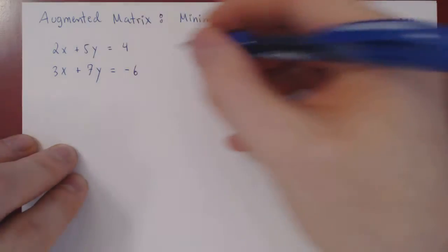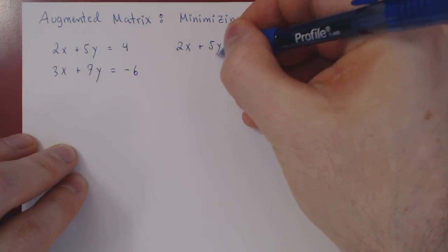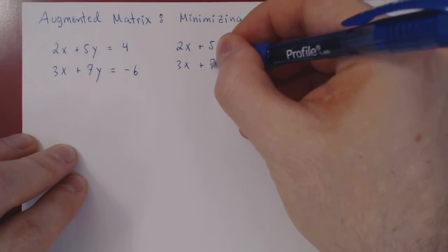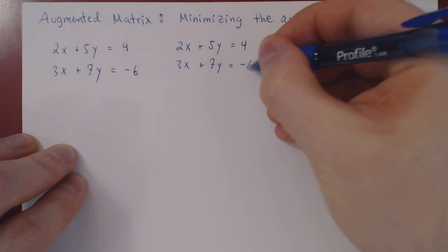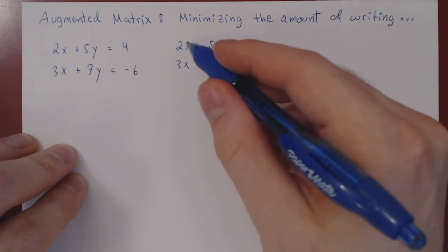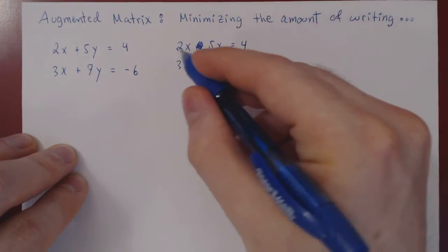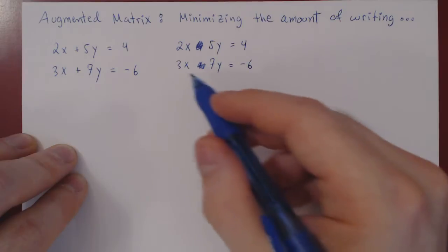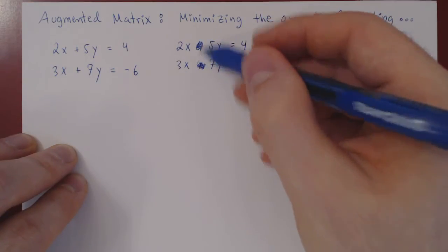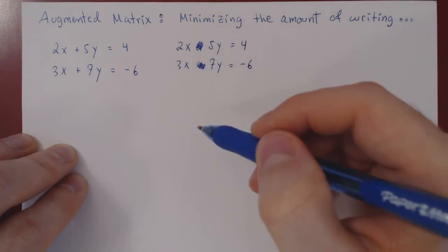If we simply write 2x space 5y, and 3x space 7y, we know that what goes in between is a plus. So there's no need to write it, as we know it's always a plus.